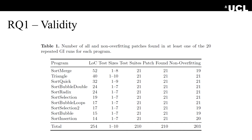Going to the results. The first is the sanity check for research question one. In summary, for 210 executions of GI, only seven were not able to generate a non-overfitting patch. So the answer to research question one is yes — GI can generate non-overfitting and valid patches for non-functional improvement.